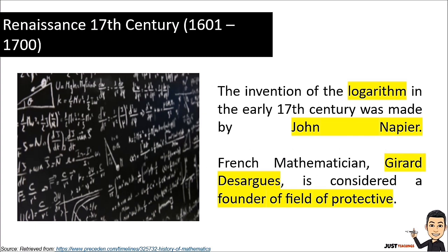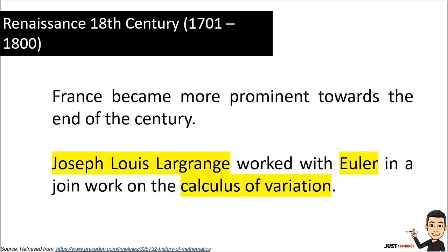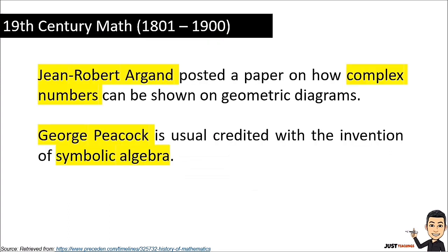From the Renaissance of the 17th century: the invention of the logarithm in the early 17th century was made by John Napier, and French mathematician Gérard Desargues is considered the founder of the field of projective geometry. In the 18th century, France became more prominent. Joseph-Louis Lagrange worked with Euler on the calculus of variations.